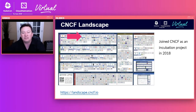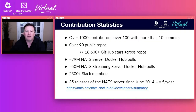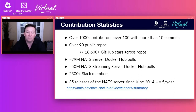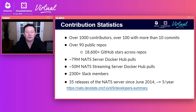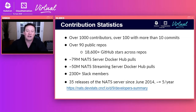We joined CNCF as an incubation project in 2018, and we're part of the messaging and streaming projects. We have over a thousand contributors over the last 10 years, with 100 or more having more than 10 commits. We've got quite a few public repositories and are hoping to break 20,000 GitHub stars. We have about 130 million Docker pulls between the NATS server and NATS streaming server.